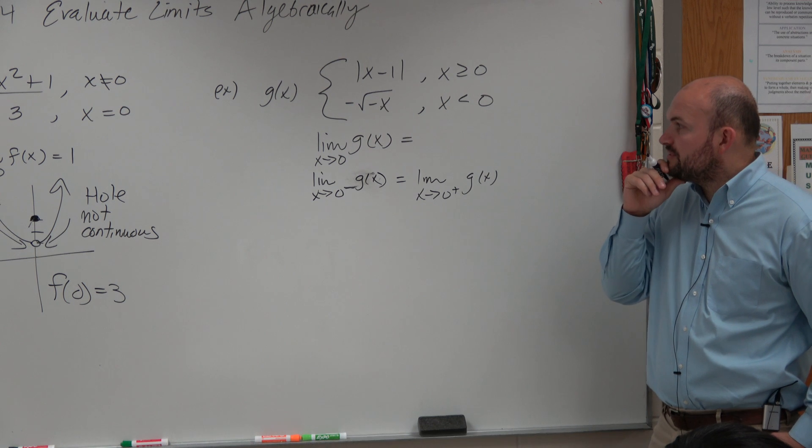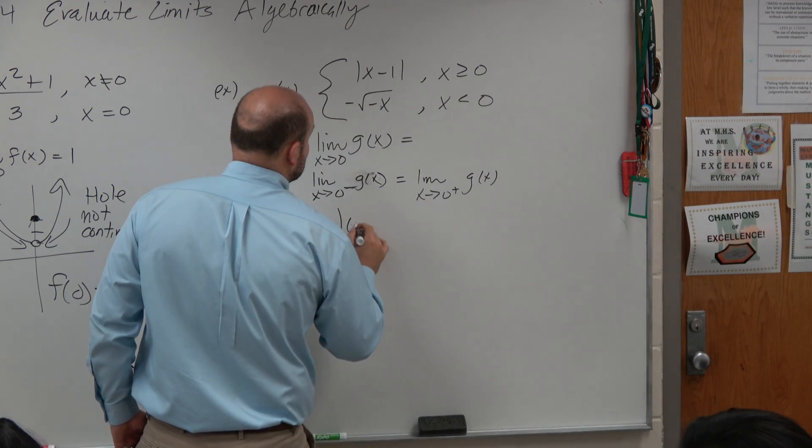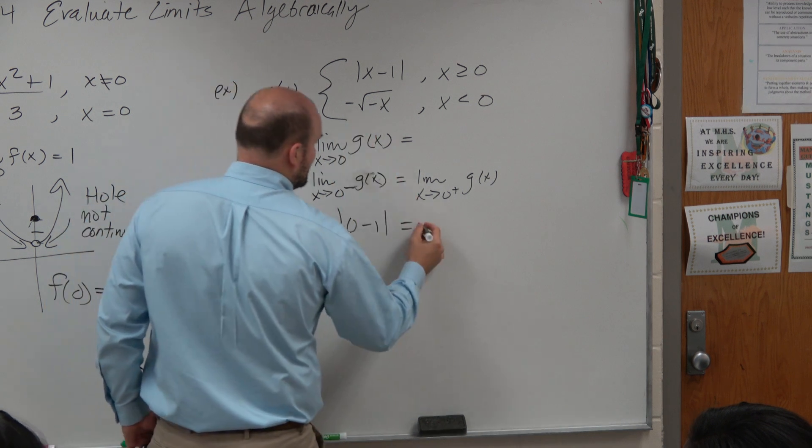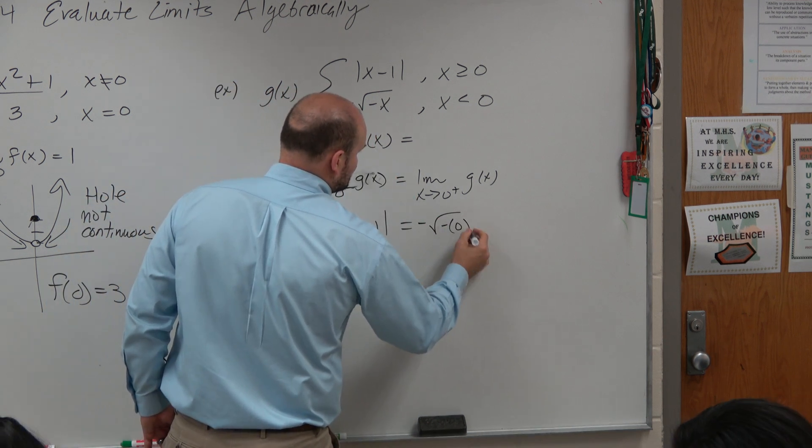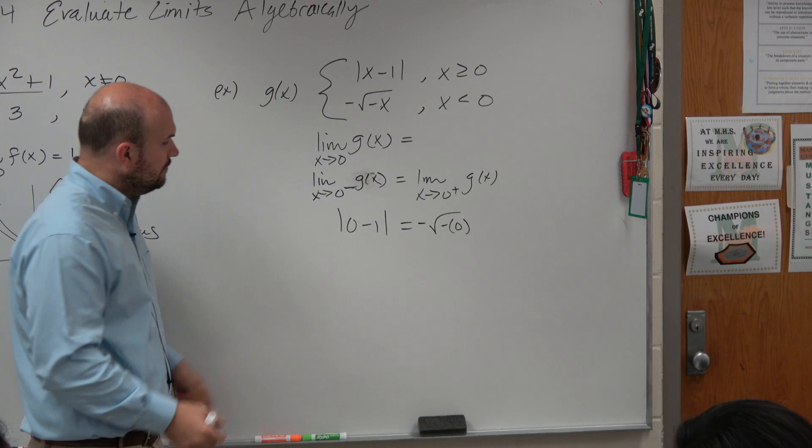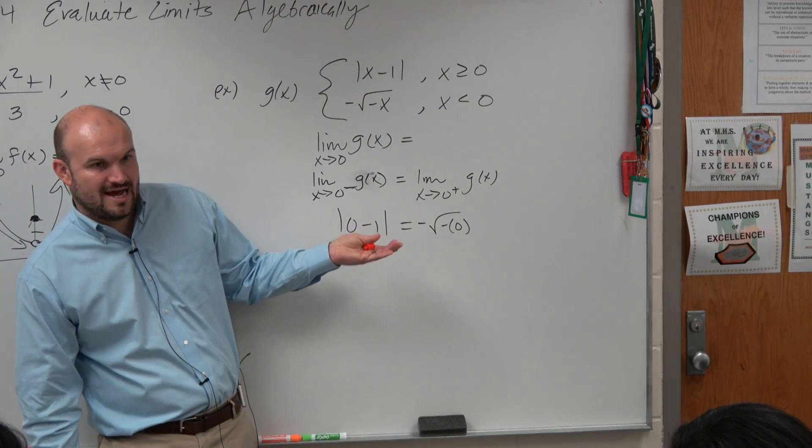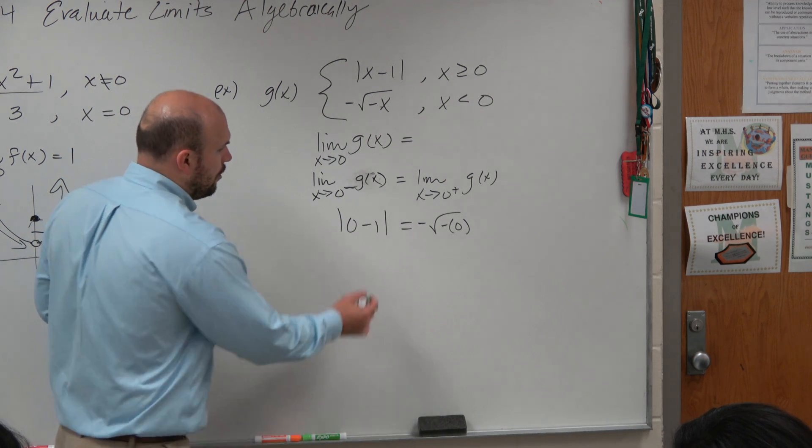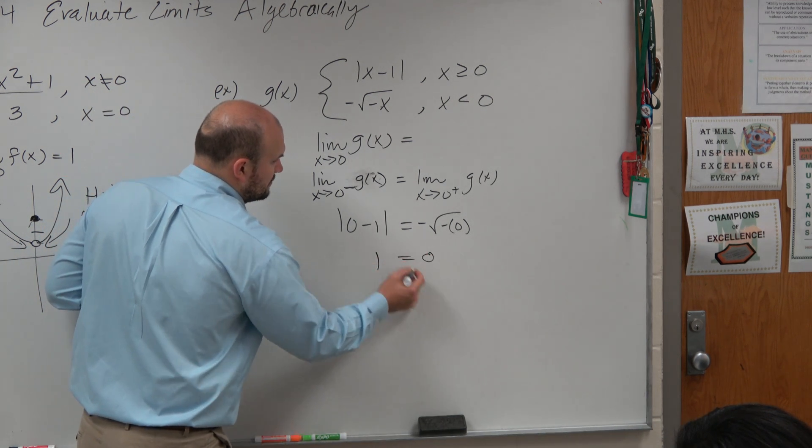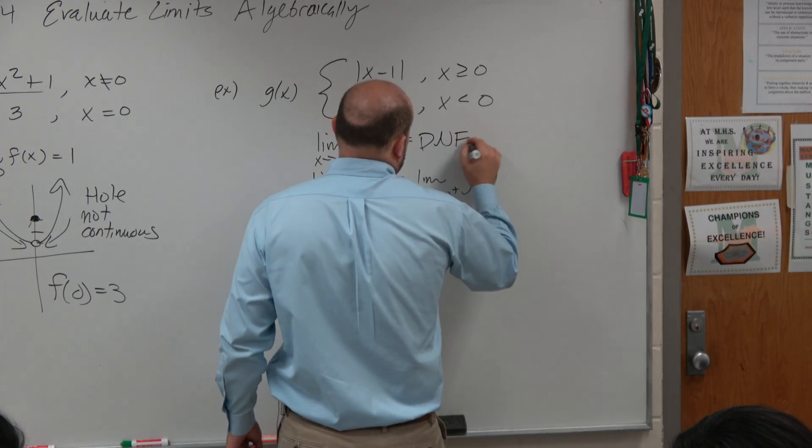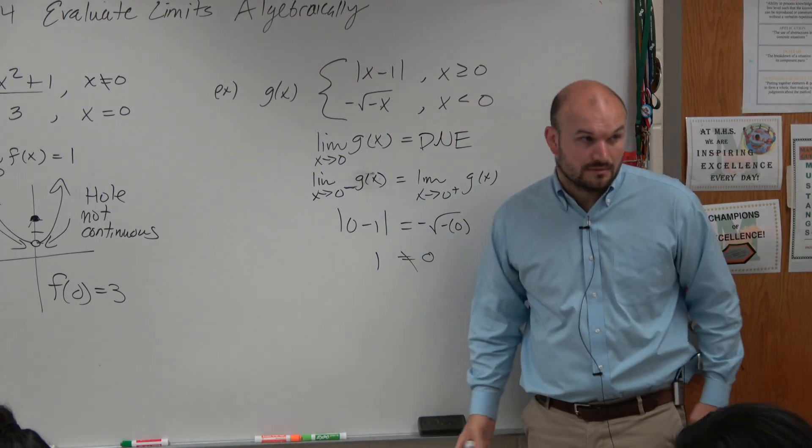And when we do it in this case, when we evaluate now, we have 0 minus 1 absolute value has to equal negative square root of negative 0. Well, 0 minus 1 is negative 1. Absolute value of 1 is 1 equals 0. Uh-oh, they are not the same. So this limit does not exist, right?